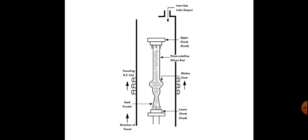In comparison to the CZ process, where the seed crystal is dipped into a molten EGS bath, in the FZ process we use a traveling RF coil. The silicon rod is rotated around the seed crystal. This is the key difference in the FZ process.